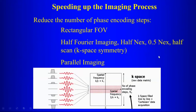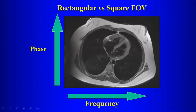To speed up the imaging process, it all comes down to reducing the number of phase encoding steps or acquiring them faster, because those are the rate-limiting steps in MR. The three main methods are: rectangular field of view, half Fourier imaging (also called half NEX or 0.5 NEX), and parallel imaging.